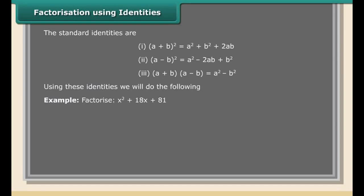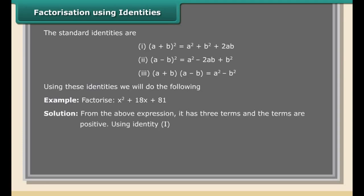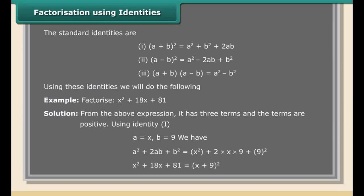Example: Factorize x² + 18x + 81. The expression has three terms, all positive. Using identity 1 with a = x and b = 9: a² + 2ab + b² = x² + 2(x)(9) + 9² = x² + 18x + 81. Therefore, x² + 18x + 81 = (x + 9)².